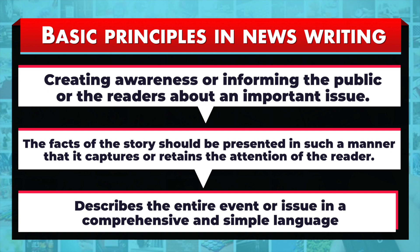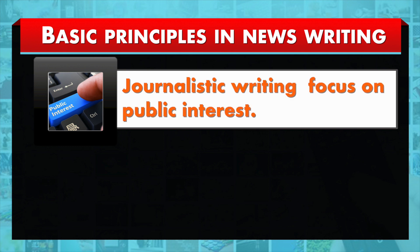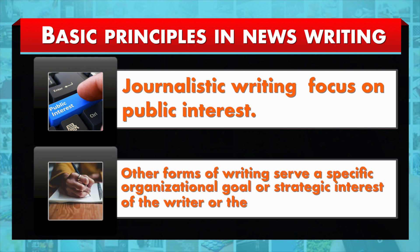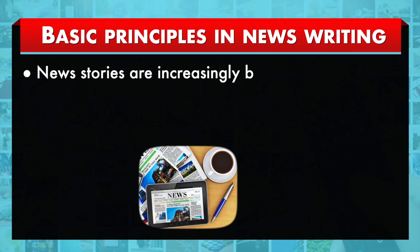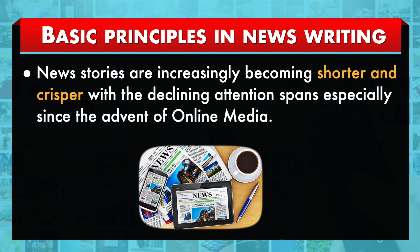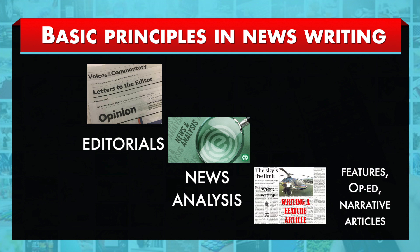The story should describe the entire event or issue in a comprehensive and simple language and analyse it in such a manner that it expands the already existing knowledge of the reader. The main difference between journalistic writing and other forms is that other forms of writing serve a specific organizational goal or strategic interest of the writer or the sponsoring authority, rather than public interest. News stories are written for a reader in a hurry who has just enough time to scan the story, and are increasingly becoming shorter and crisper with the declining attention spans, especially since the advent of online media. However, this may not be true for specialized news columns such as editorials, news analysis, features, op-ed, or narrative articles.